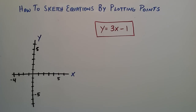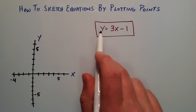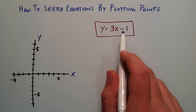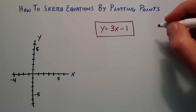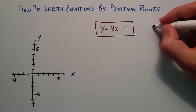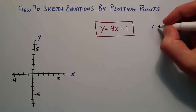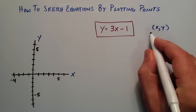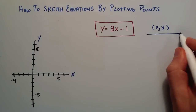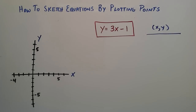Hey everyone, this is Paul. Welcome to lesson 59 in the Intermediate Algebra series. In this tutorial we're going to be sketching the equation y is equal to 3x minus 1. This is just one more example before we move on — just like the previous two tutorials. It wouldn't hurt to do another example before we cover something else.